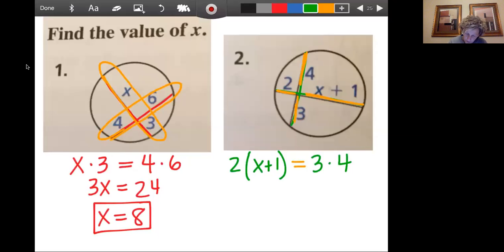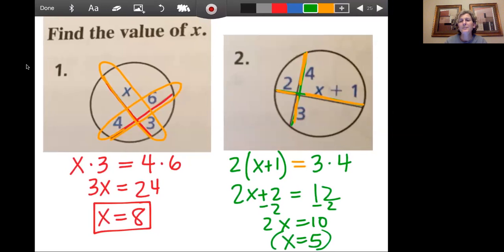And so if we distribute here, we get two X plus two equals 12. Subtract off the two. Two X equals 10. And X equals five.